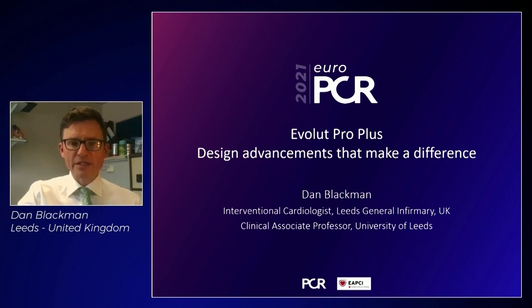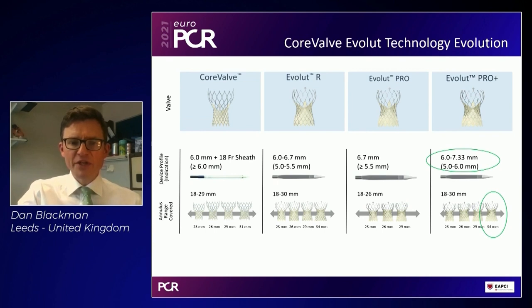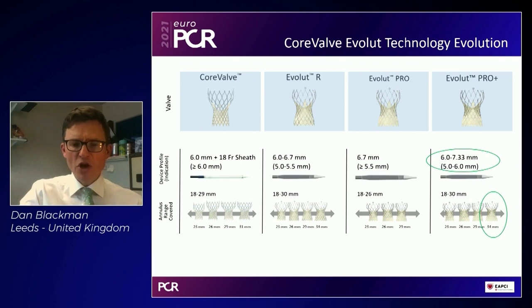I'm Dan Blackman, an interventional cardiologist and TAVI operator from Leeds, UK. We've seen a number of iterations of the CoreValve Evolute platform over the years. We started with the CoreValve system delivered via an 18 French sheath, not repositionable or recapturable. The first big development was Evolute R, which introduced repositionability through recapturability and a sheathless approach — down to 14 French equivalent — treating patients with vessel diameters as low as 5 millimetres.